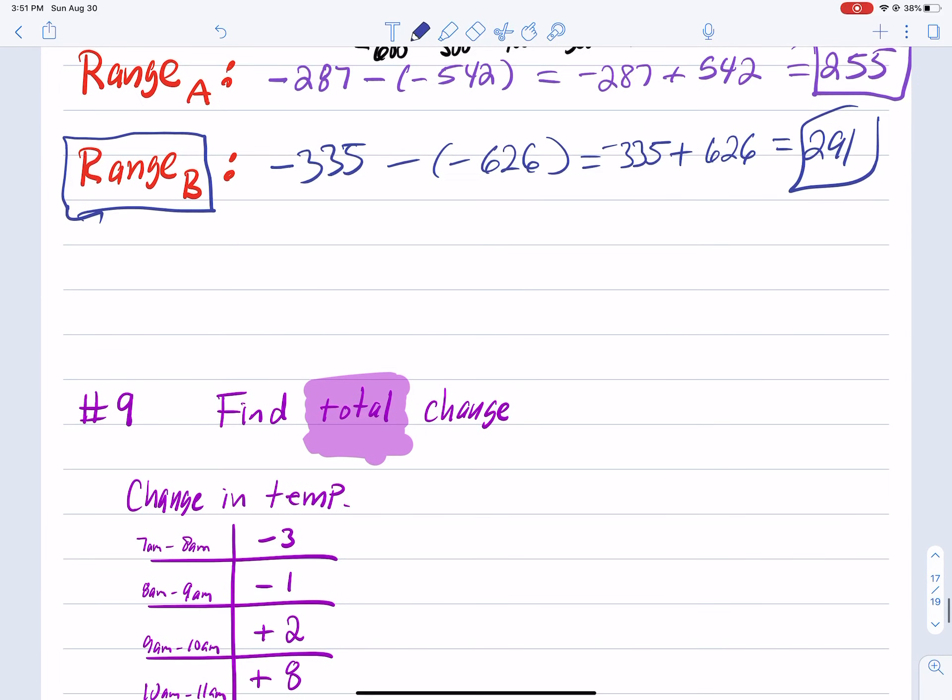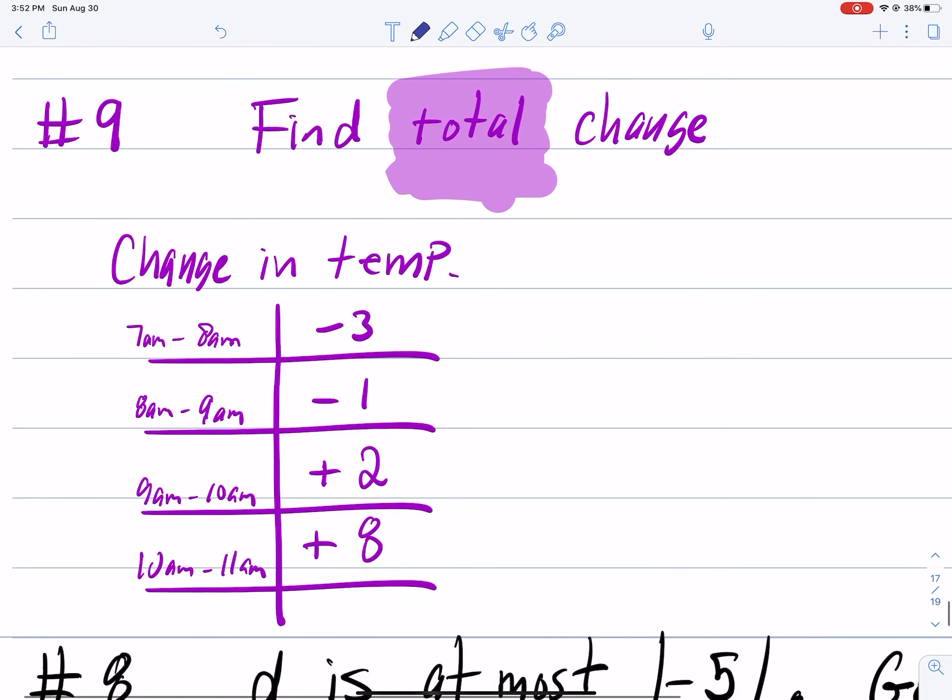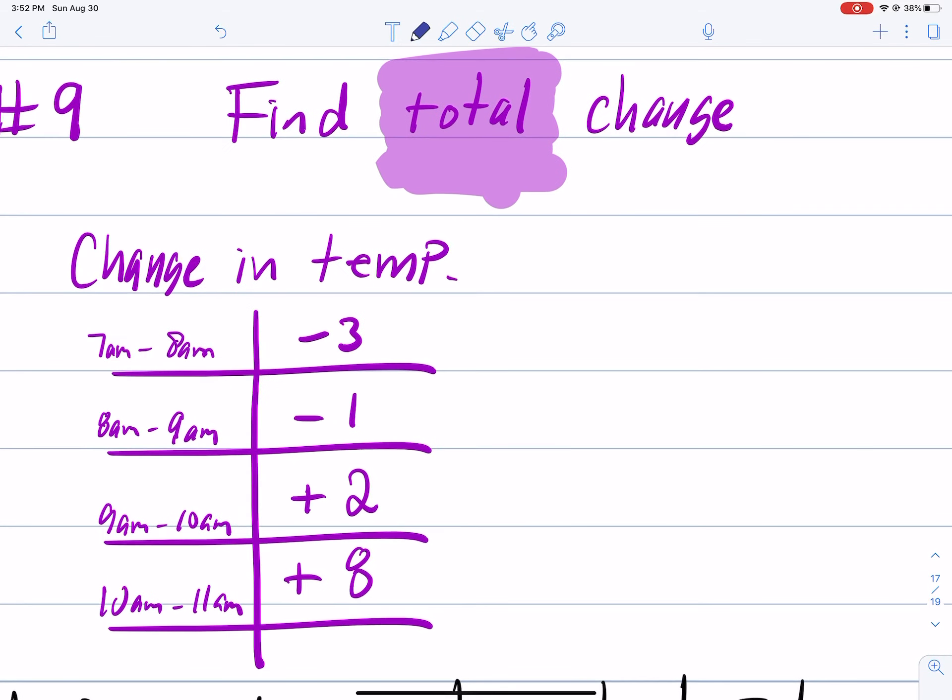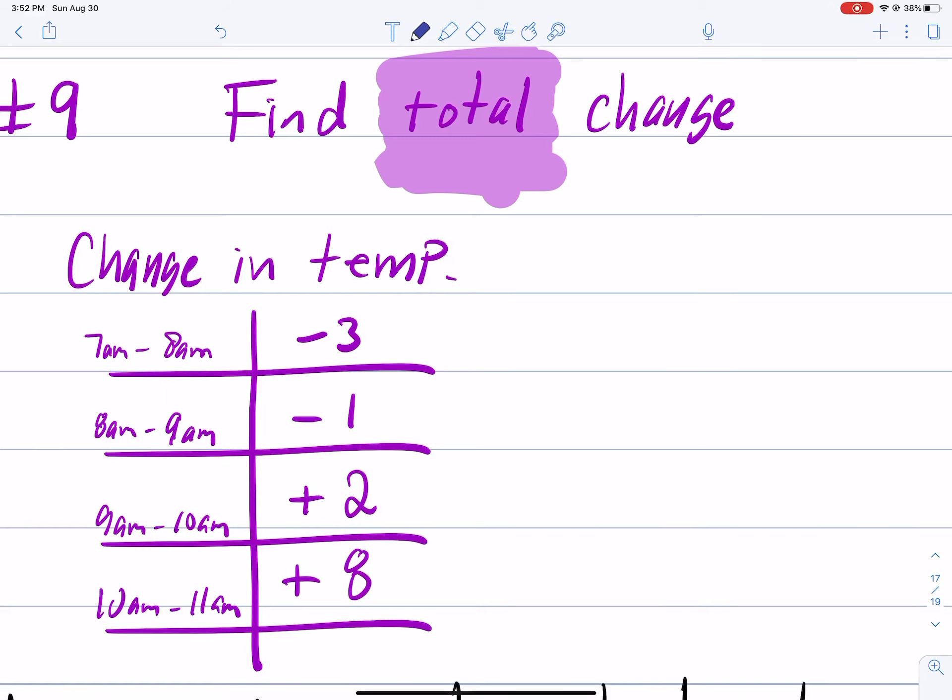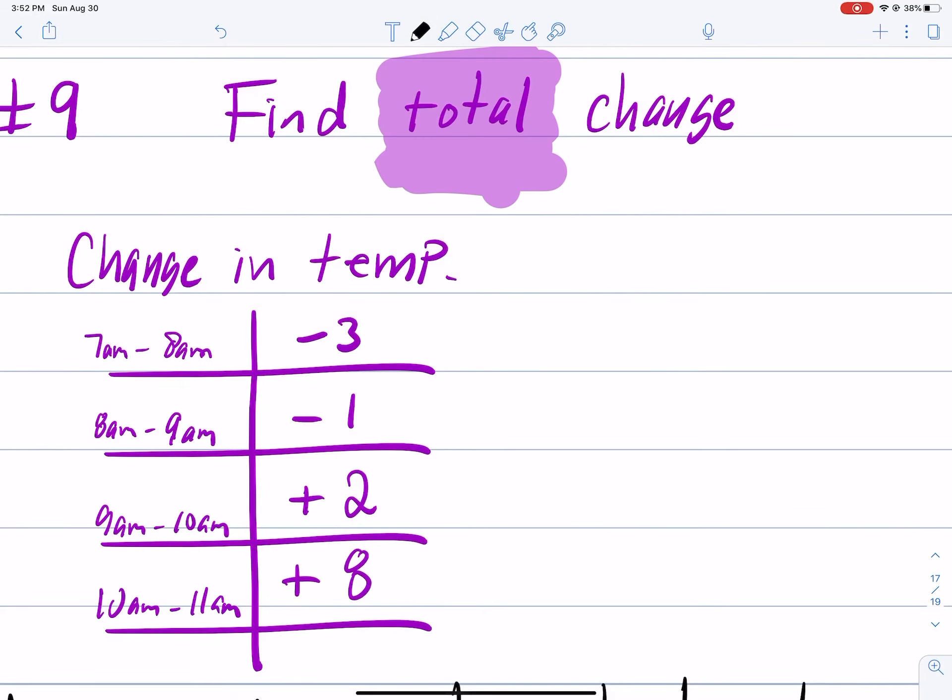Alright, so that's one that we struggled with. I have a feeling it was defining the range values. Now number nine says find the total change in temperature in four hours. The question was a little more descriptive than that but I'm trying to make this quicker. So to find the total you always add.